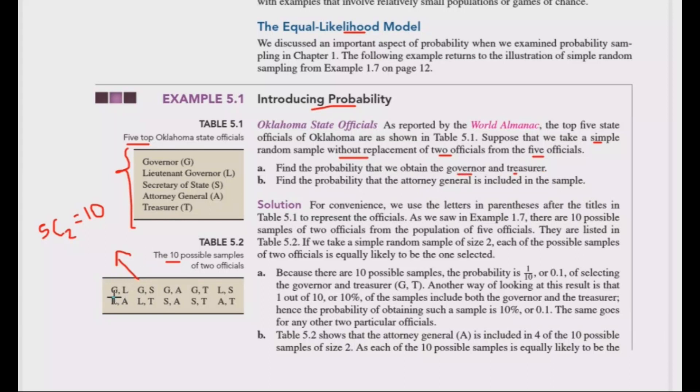Next question: find the probability that we obtain the governor and the treasurer. The governor and treasurer together represent one outcome out of the total sample size of ten. So the probability is 1 over 10, which equals 0.1 or 10 percent.